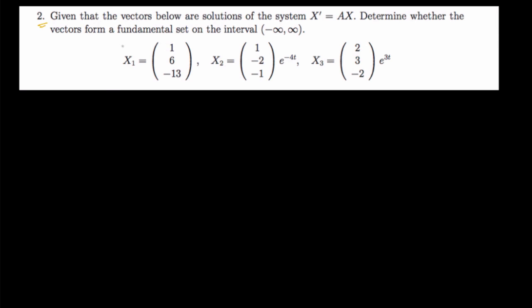For question number 2, we are told to show that the given vectors — vector 1, vector 2, and vector 3 — satisfy the system, and to determine whether these vectors form a fundamental set. A fundamental set simply means we want to check whether the three vectors are linearly independent on the interval negative infinity to infinity, that is, for all t belonging to the set of real numbers.